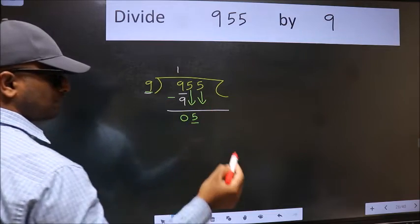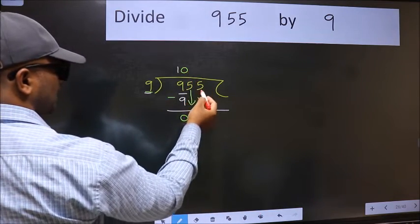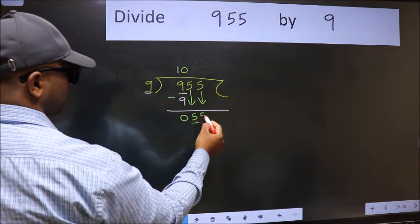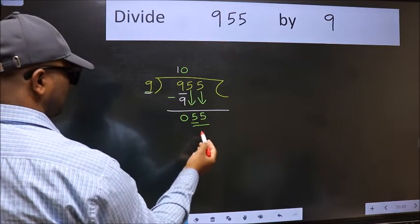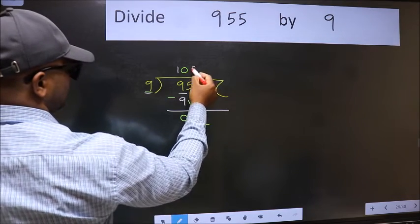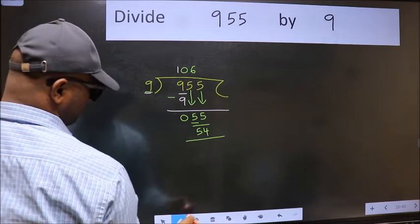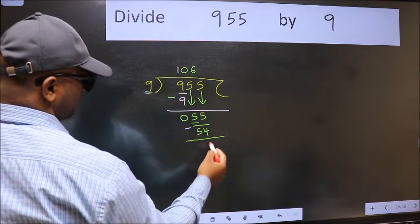And the rule to bring down the second number is we should put 0 here. Then only we can bring this number down. Now 55. A number close to 55 in the 9 table is 9 times 6, 54. Now we should subtract. We get 1.